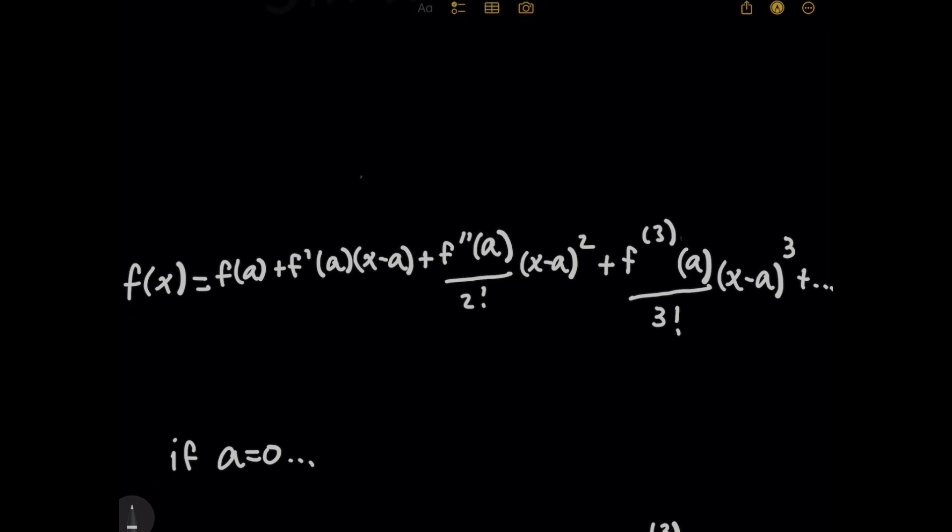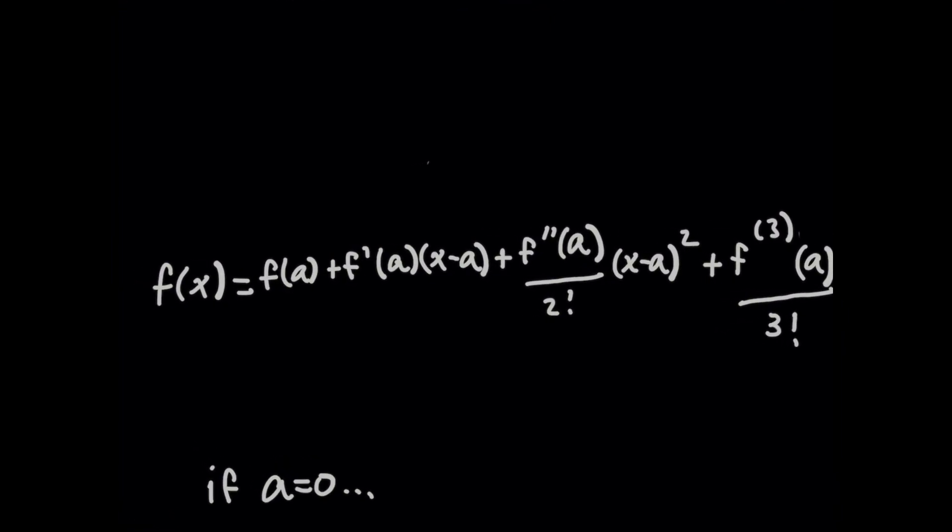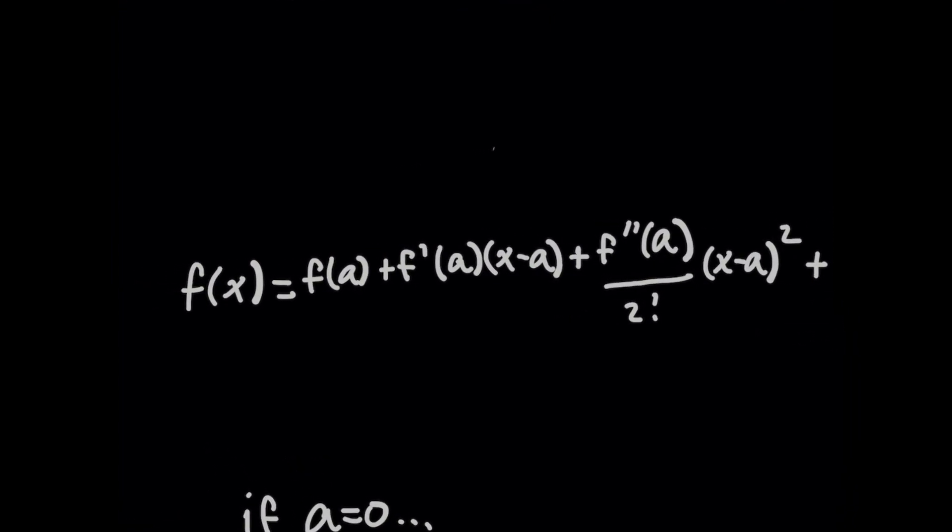Maybe you've seen this before, but for any function f, what I can do is I can center it at a point. For that point, we're going to let x be a constant, which we'll call a, and for any function f, its Taylor series centered at a can be rewritten as this.